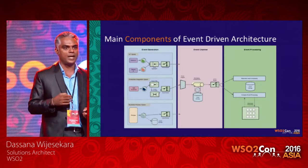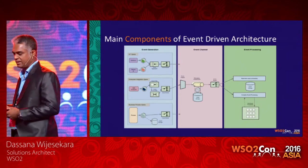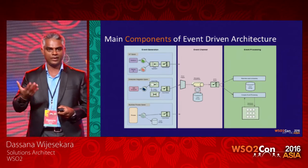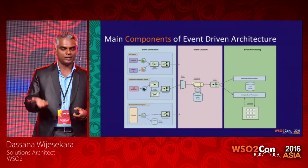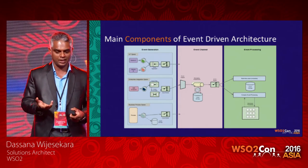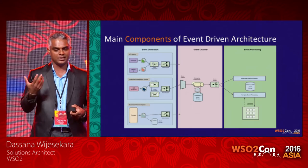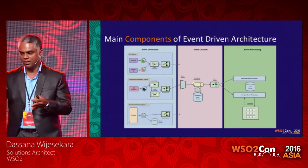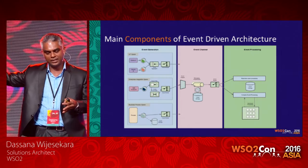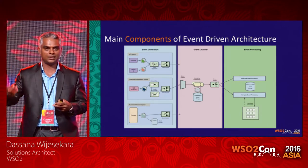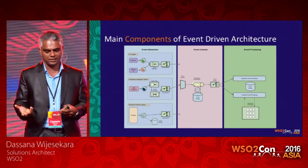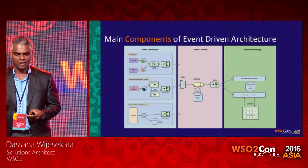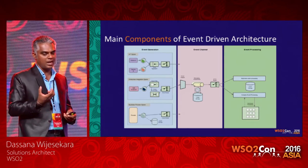The main components of an event-driven system are three: first, event generation — the events, event source, and how events are handled; second, the event channel — how events are transported to the event processing or event consumer; and third, the most important, event processing. These three components make up event-driven architecture.